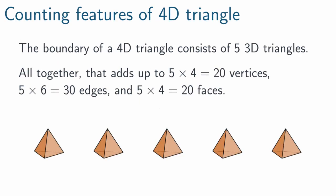Here's the magic. The boundary of a 4D triangle is made up of 5 tetrahedra. When we consider them all just sitting there, minding their own business, that adds up to 20 vertices, 30 edges, and 20 faces. You just count them all up.